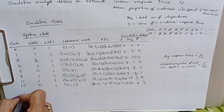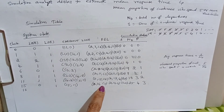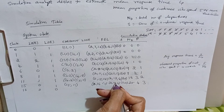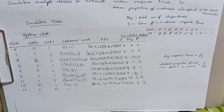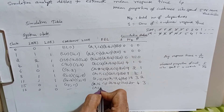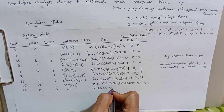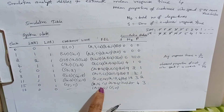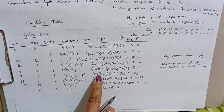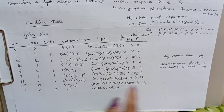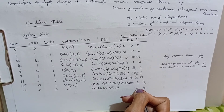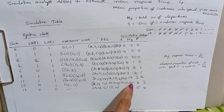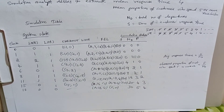Clock time advances to 16. C5 completes service. No customers remain in the queue and the server is idle because the next customer arrives at time 18. The future event list now shows arrival at 18 for C6 and stopping time 60. C5 entered the system at clock time 11 and departed at 16: 16 minus 11 equals 5 minutes. Count increases since 5 minutes meets the threshold. ND becomes 5 and S updates to 25 plus 5 equals 30.